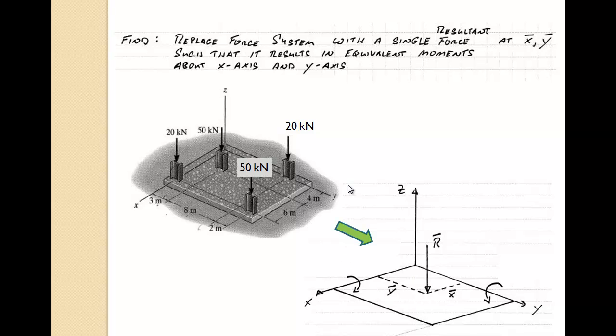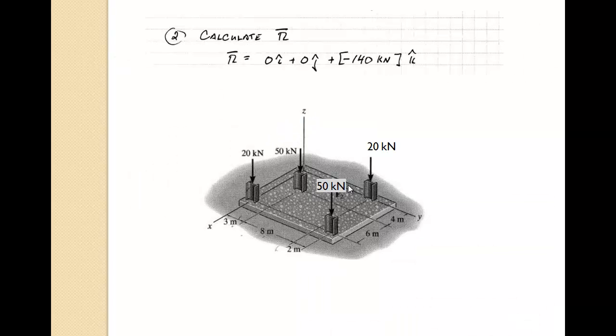All right, so the first thing we need to do is calculate the resultant force. The resultant force is a three-dimensional vector, but it only has a z component, in this case a negative z component. So the z component is obtained by adding up the two 50 kilonewton loads and the two 20 kilonewton loads for a total load of 140 kilonewtons.